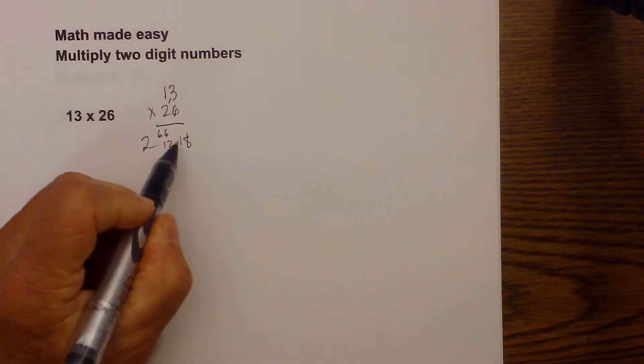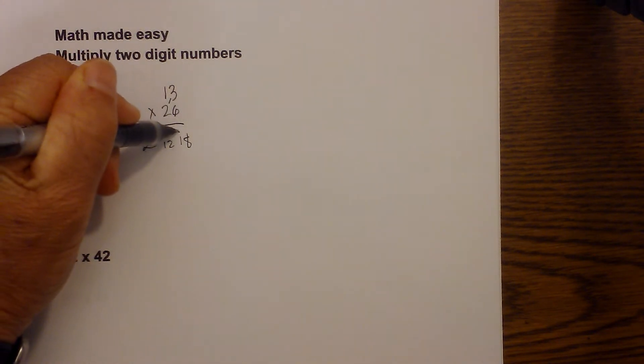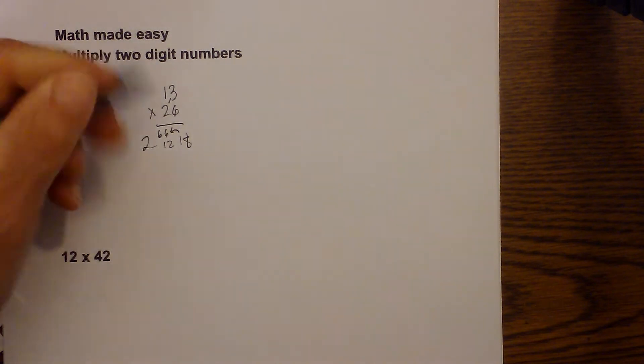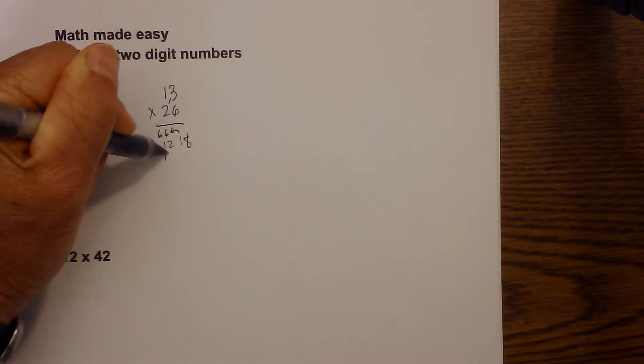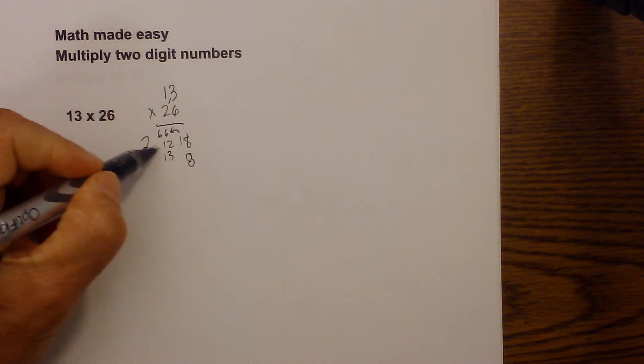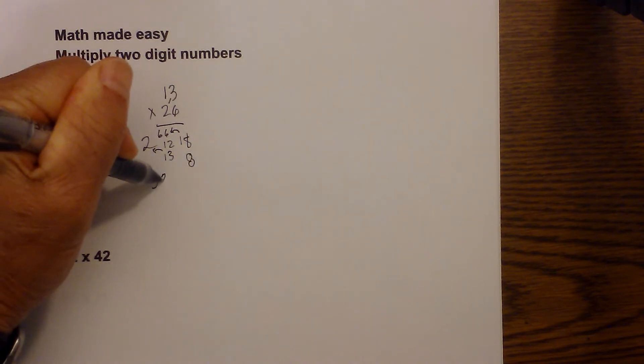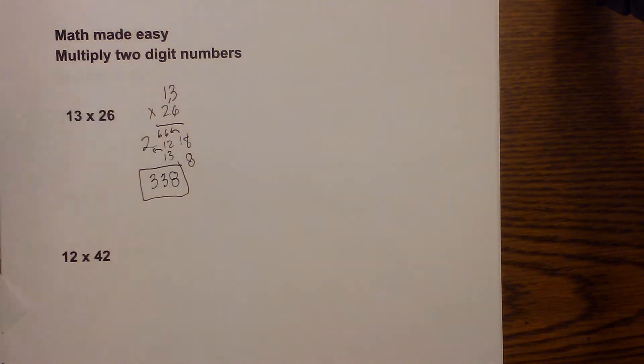So now we can't have two-digit numbers in this answer so I need to move the 1 over. So the 12 becomes a 13 and this becomes an 8. And then the 13 we need to move this 1 over to the 2 and the 2 becomes a 3, 3, 8. And that is your answer. 13 times 26 is 338.